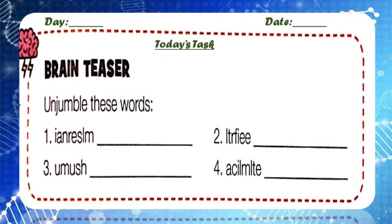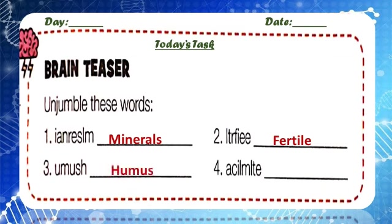Brain teaser. Here we have an interesting activity — unjumble these words. The first word is minerals. The second is fertile. The third word is humus. And the fourth one is metallic.